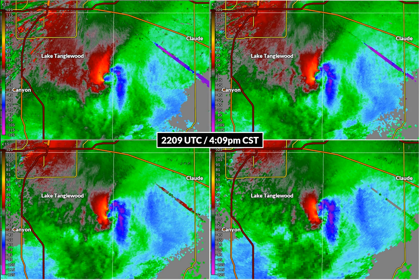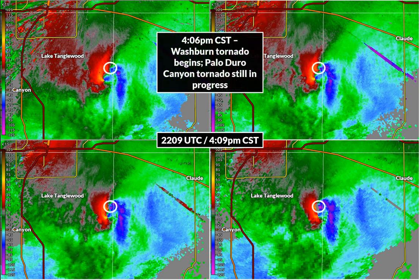Moving ahead to 4:09 p.m. Central Standard Time. Three minutes before this image, at 4:06, what you would expect to happen has occurred: we have another tornado. The Palo Duro Canyon tornado is still in progress, but the Washburn tornado has begun. This is now the third instance of having two tornadoes in progress at the same time with this supercell.